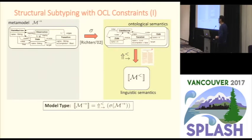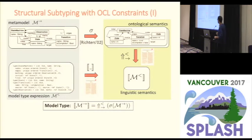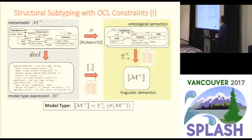We have defined a semantics translation from ontological semantics to linguistic semantics, where abstract syntax graphs are encoded as terms. A model type for a metamodel is given by the composition of the interpretation function for a class diagram and the semantics translation described in the paper. There should be a way of linking these two syntactic representations, which is achieved by a map we call 'declaration', already implemented in tools like EMFatic.